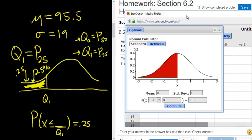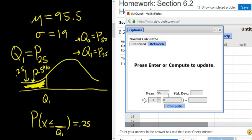And just plug in all the numbers. So the mean was 95.5. The standard deviation was 19. And then it's the first quartile, so 25th percentile. So you always put the area or the decimal in the second box. And just make sure it looks okay. So we have our mean, our standard deviation. We have the P, the X, the less than, the 0.25.